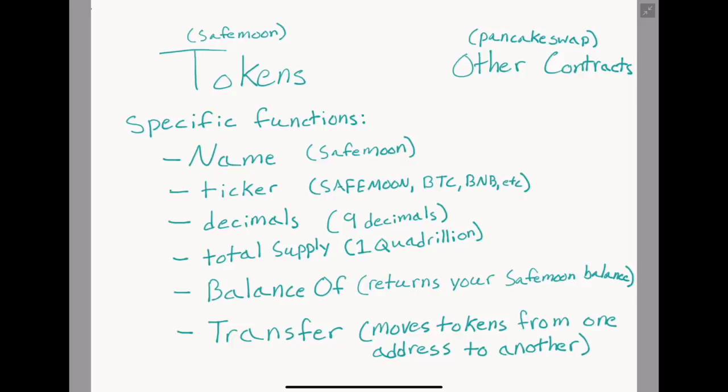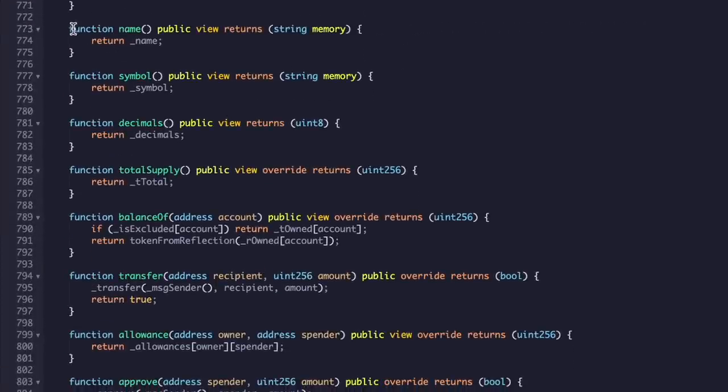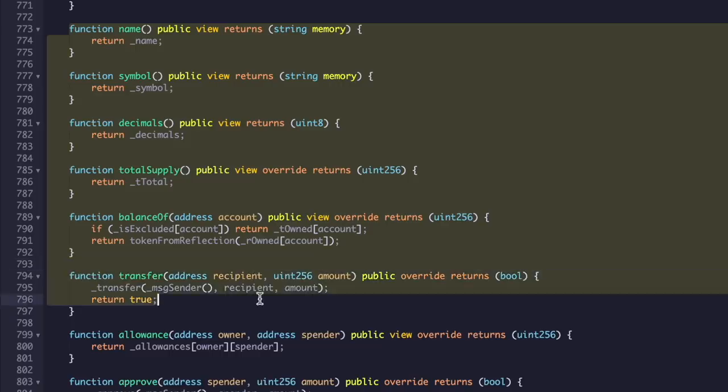Using these functions and a few others, the blockchain is able to recognize the smart contract as a token and they can call all the necessary functions needed to interact with it. Let's take a look at SafeMoon's code to see how they built themselves up as a token. As we scroll through their source code, we can see all the essential functions we had just talked about.